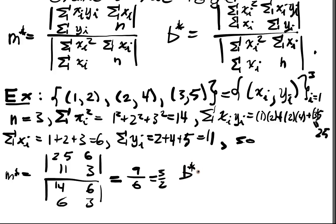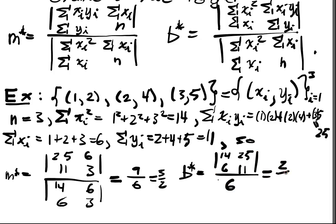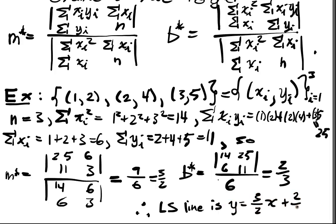Plugging into the formula, M star equals the determinant of [25, 11; 6, 3] over the determinant of [14, 6; 6, 3], which works out to 9/6 or three halves. B star equals the determinant of [14, 25; 6, 11] over the same denominator, which works out to two-thirds. Therefore, the least squares line is Y equals three-halves X plus two-thirds.